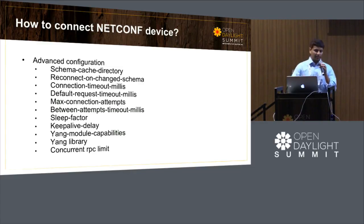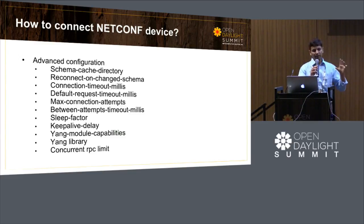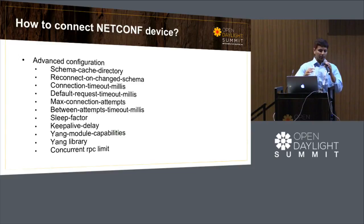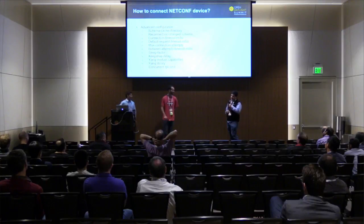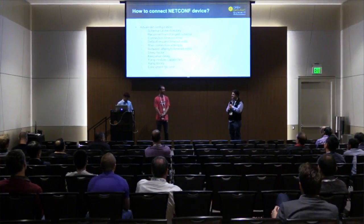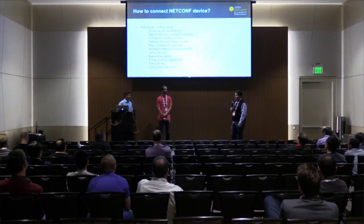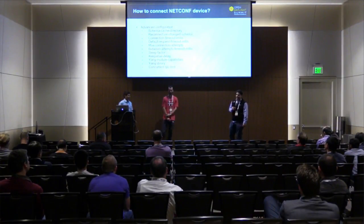The schema cache directory is a means of giving you a clean place to have only the Yang files of a particular device, so you can specify a directory without any clash with Yang files from other devices, including ODL's internal models. If you specify this directory, it's completely clean, and even if there are idiosyncrasies on either the device side or the ODL side, those can be avoided. This is probably your best friend. Hopefully this will be solved with the binding spec v2, so we won't have to worry about it anymore, but it's an inherent flaw in the current architecture.